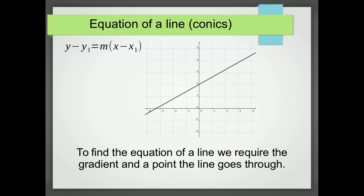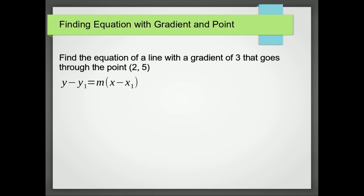So let's see an example of that. Finding the equation of a line with a gradient of 3 that goes through the point 2 and 5. So remember, we're going to use y minus y1 equals m times x minus x1. The gradient is 3, so m is 3, x1 is 2, y1 is 5.